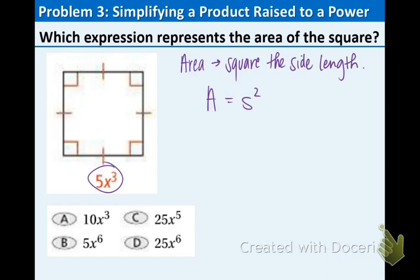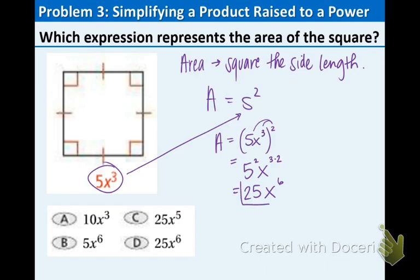Now we're going to take that 5x to the third and plug it in for the S right there. So we have A equals 5x to the third, all raised to the second. Now we want to share that 2 with everything inside. So that means we now have 5 to the second and x to the third times 2. So we're sharing the 2. That means we have 25 in front and x to the sixth, because we just multiplied 3 and 2 to get 6. So our final answer is 25x to the sixth. The main idea of this problem is that you are sharing the exponent on the very outside with everything inside.